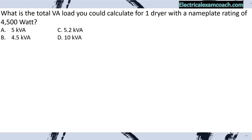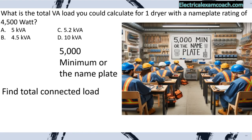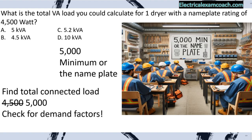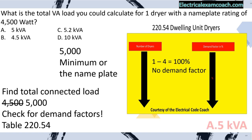Practice problem: What is the total VA load for one dryer with a nameplate rating of 4,500 watts? First, find the total connected load. We know it's 5,000 minimum or the nameplate, whichever is greater — so the 4,500 is replaced by 5,000. Check for demand factors: per Table 220.54, one through four dryers are at 100%, meaning no demand factor applies. We select A.